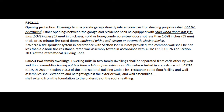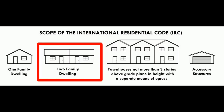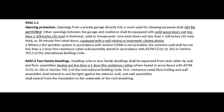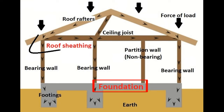R302.3 Two Family Dwellings. Dwelling units in two-family dwellings shall be separated from each other by wall and floor assemblies having not less than a one-hour fire resistance rating where tested in accordance with ASTM E119, UL263, or Section 703.3 of the International Building Code. Fire resistance rated floor, ceiling, and wall assemblies shall extend to and be tight against the exterior wall, and wall assemblies shall extend from the foundation to the underside of the roof sheathing.